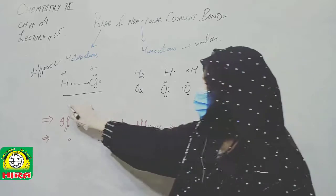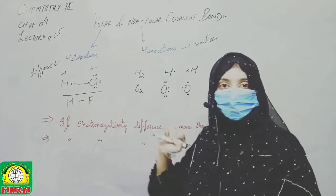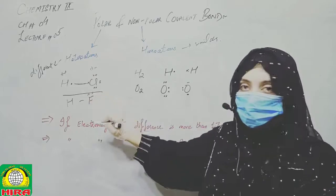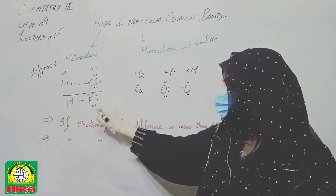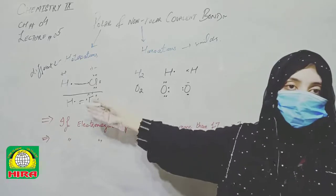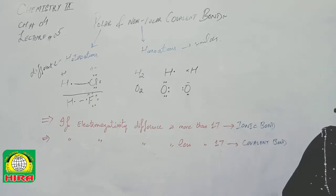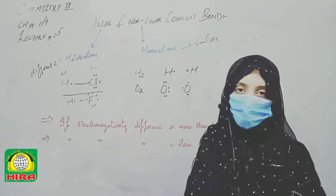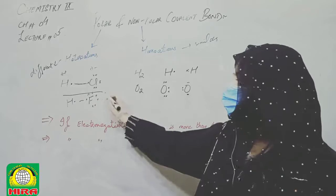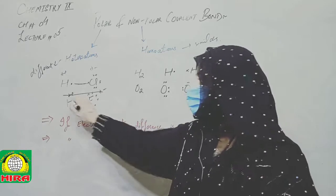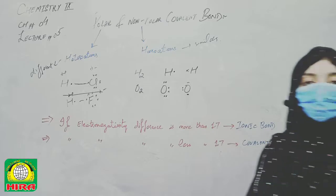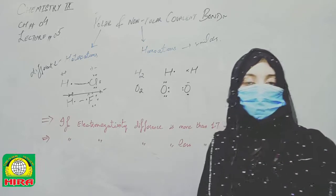Another example is HF — Hydrogen Fluoride, also known as hydrofluoric acid. Fluorine, like chlorine, bromine, and iodine, belongs to the same halogen family. In HF, fluorine is more electronegative and attracts the shared electrons, resulting in a partial negative charge on fluorine and a partial positive charge on hydrogen. This makes HF a polar covalent bond.